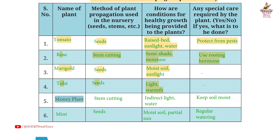Fifth plant: money plant. Method of propagation: stem cutting. Conditions provided: indirect sunlight, water. Special care required: keep soil moist.